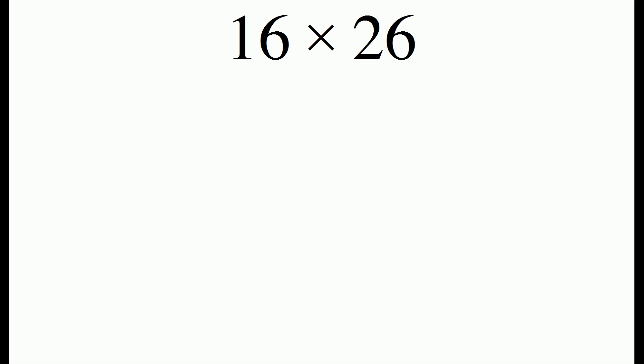Let's do another example to see how this method works. Let's say you wanted to do 16 times 26. The first step is to divide the number on the left in half repeatedly. So dividing 16 in half, we get 8, and then 4, 2, and finally 1.